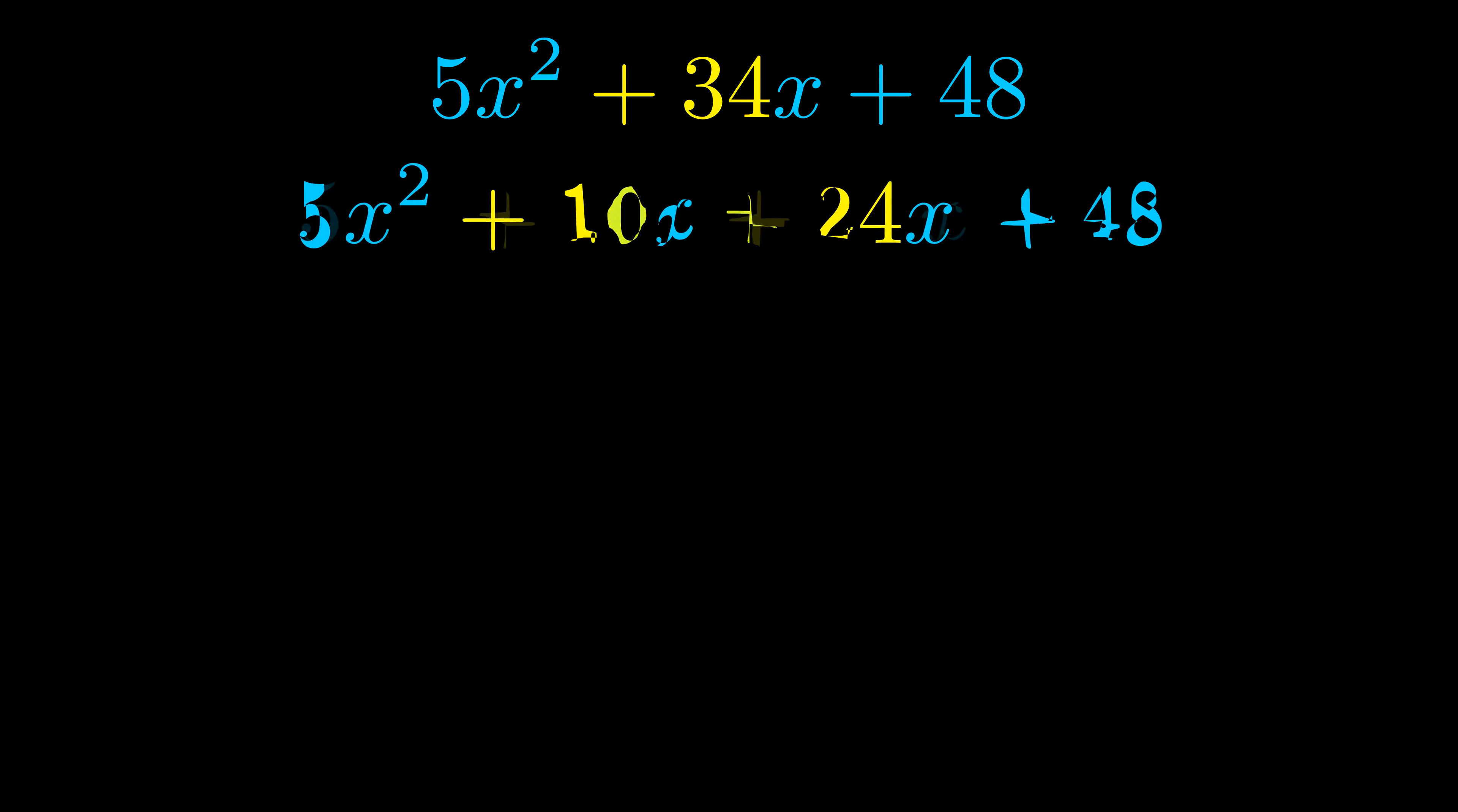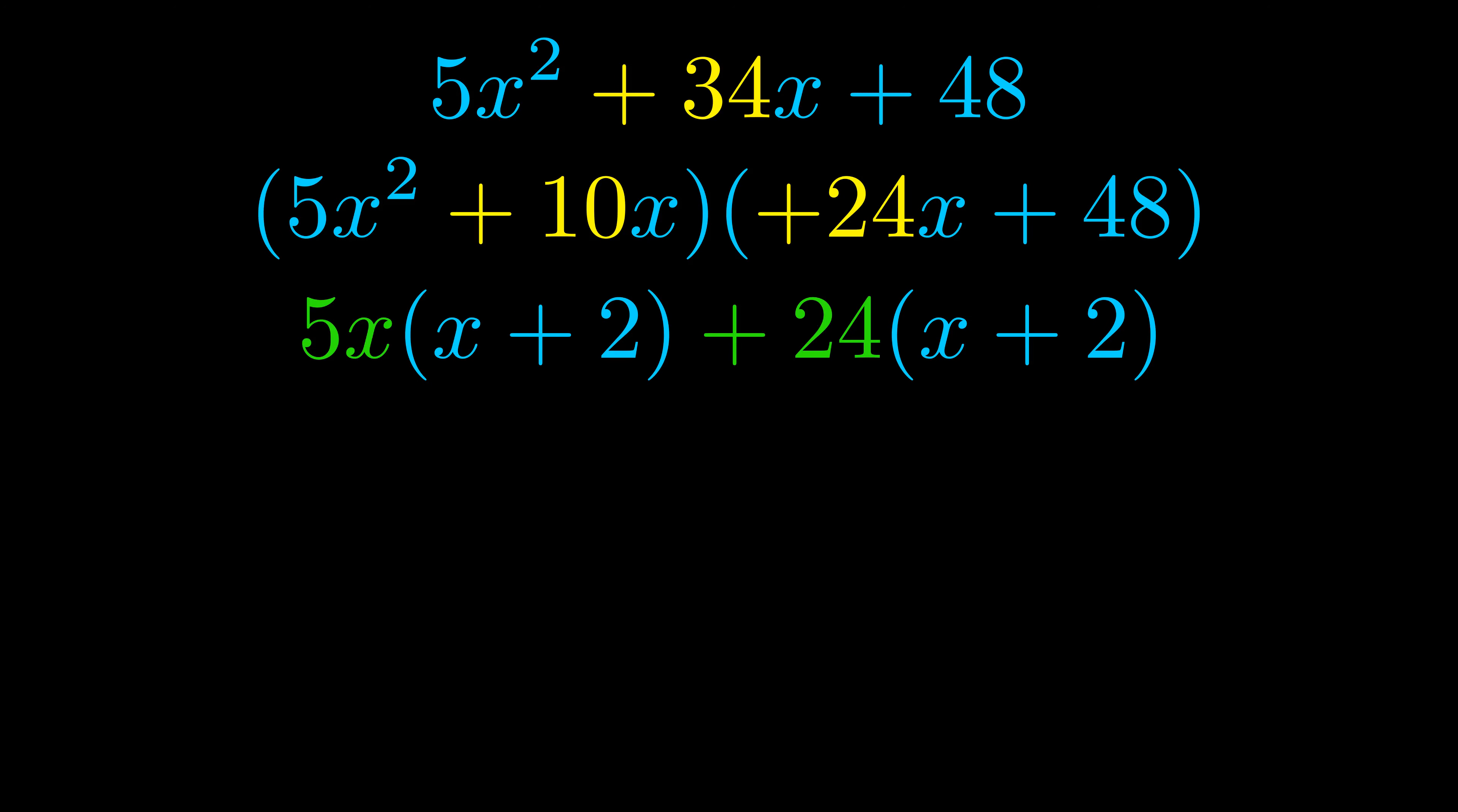Once we've done this, we go ahead and put parentheses around the first term and the last term, and we do that so we can take the greatest common factor out of both terms. We can see the greatest common factor is now outside in green. Notice also how what remains inside of the parentheses is the same in both cases. The blue values are the same.